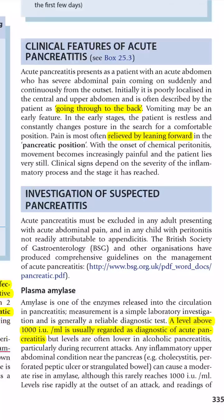For investigations, amylase level above 1000 is usually regarded as diagnostic of acute pancreatitis. Keep in mind that amylase can be elevated in other conditions — perforated peptic ulcer, perforated appendix, diverticulitis, bowel ischemia, and sialoadenitis (parotid inflammation). These other causes elevate amylase but usually not to 1000, so a level above 1000 is considered diagnostic.